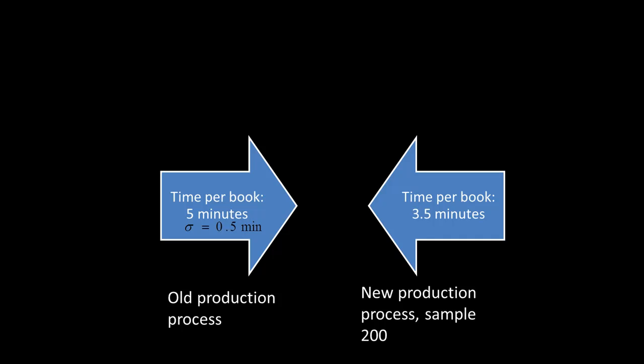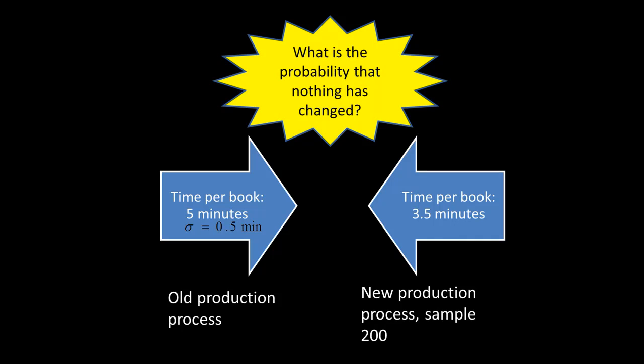If this is very unlikely, we can say this could not have happened by accident — something has really changed. Depending on the numbers, you might find there's a 30% chance it happened by accident, meaning the true mean is still 5 but you got 3.5 by freak chance. As opposed to finding only a 0.001% chance. So: what is the probability that nothing has changed and we randomly saw a freak sample whose average time was 3.5 minutes?